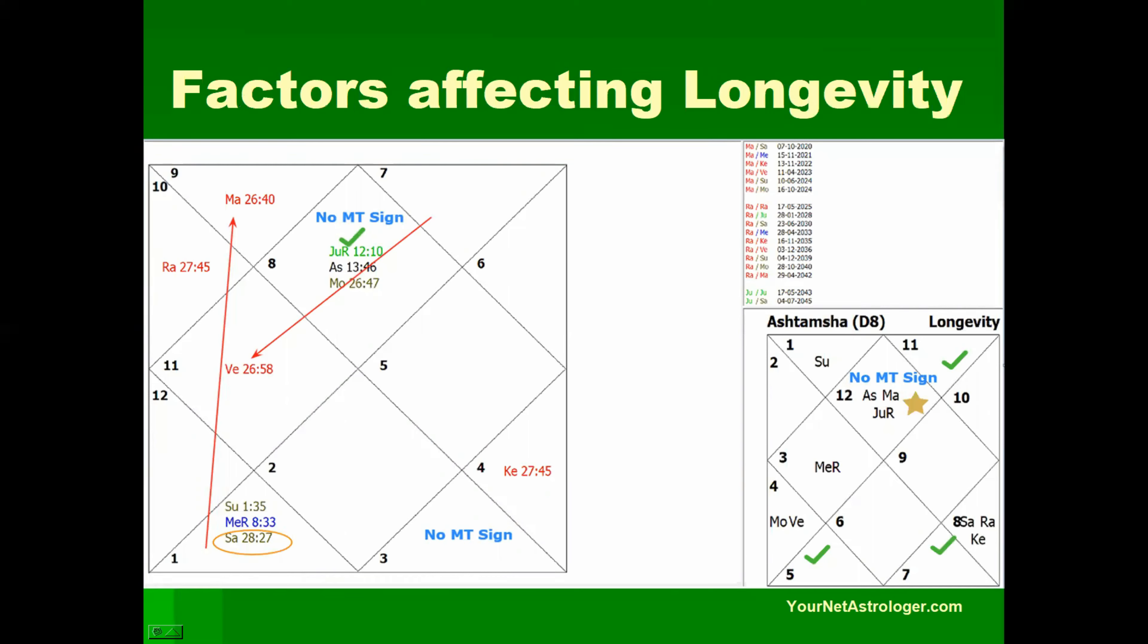First and foremost thing, there is no empty sign rising in the ascendant, no empty sign rising in the eighth house and no empty sign is rising in the ascendant of D8 the Ashtamsa. So that is a good thing because when the empty sign is rising then the strength of that planet is to be seen. Now when there is no empty sign, we move to other factors.